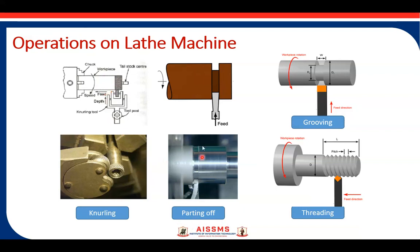The next operation is parting. It is for creating a part-off cut on the workpiece, using a parting tool. Next is grooving operation — to produce a groove of required shape. You can produce a semi-circular groove or square-type groove on the workpiece with the help of a grooving tool, with feed perpendicular to the axis of the workpiece.